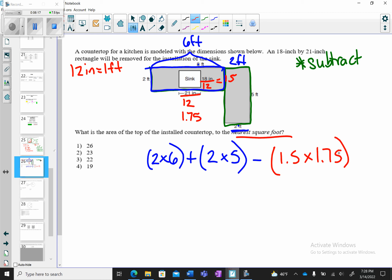And again, we want to subtract the sink because that's taking away countertop space. So let's do the math. 2 times 6 is 12. 2 times 5 is 10. We're subtracting 1.5 times 1.75, which is 2.625. 12 plus 10 is 22. 22 minus 2.625 is going to give us roughly 19.375, and that rounds to 19. So don't forget that when there's a shaded sector, we're going to subtract.